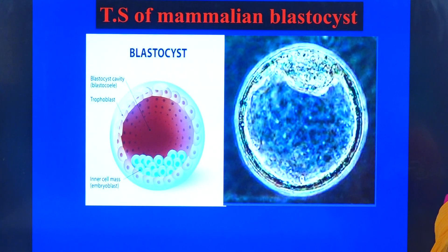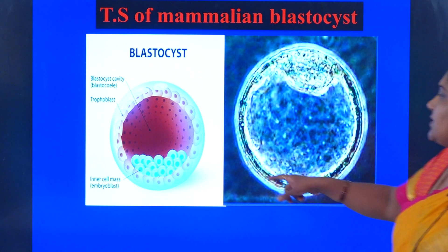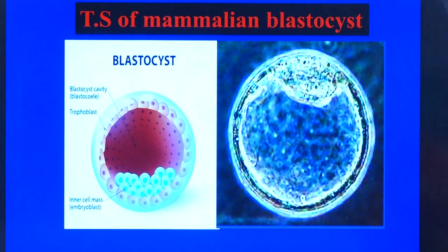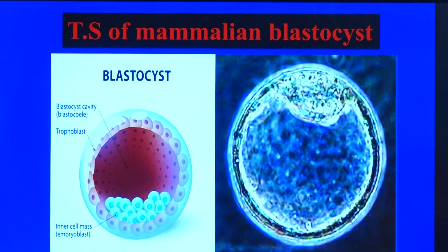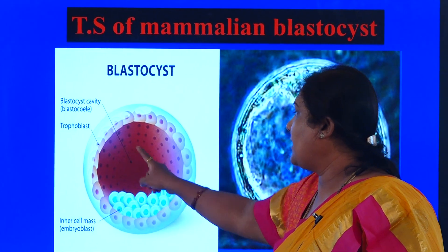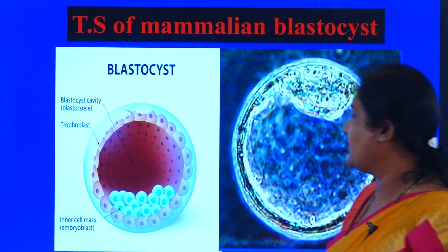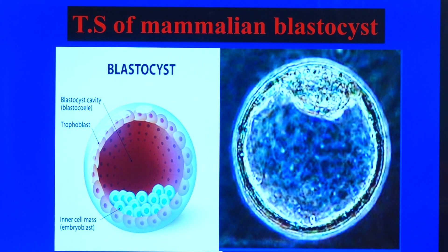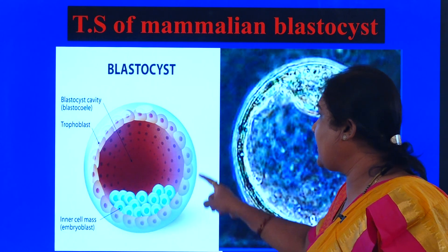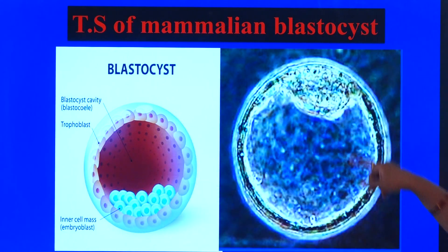Those are the key features of the blastocyst. Have a look at this diagram — this is the diagrammatic representation and this is how it appears under the microscope. There is the trophoblast as a single layer of cells, then the blastocele, and the inner mass of cells. In both views, we can see one glistening layer on the outside, and that glistening layer is called the zona pellucida.